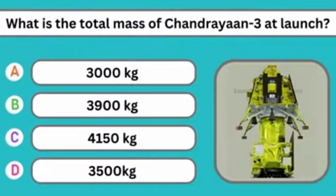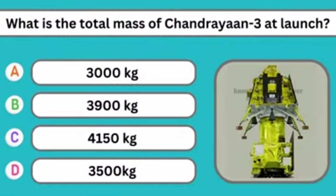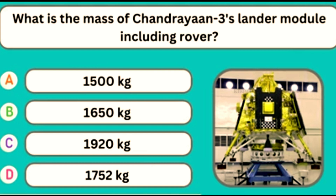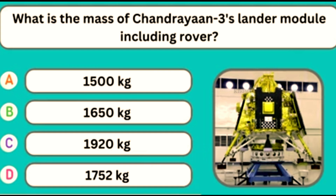What is the total mass of Chandrayaan-3 at launch? Option B — 3,900 kg. What is the mass of Chandrayaan-3's lander module including the rover? Option D — 1,752 kg.